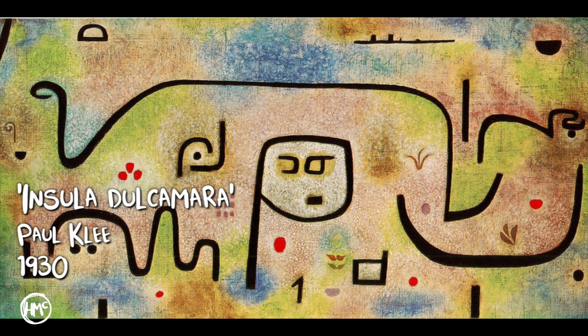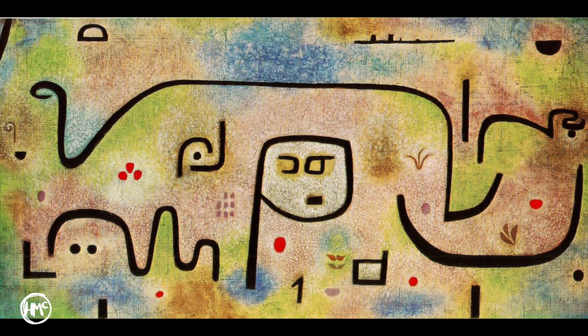The artwork that I will focus on today is called Insula Dulce Mara and it was made in 1938. Insula means island so the English translation is Dulce Mara Island. It's such a warm cheerful oil painting that was painted in a time of Paul Klee's life when he was suffering from an awful wasting disease.